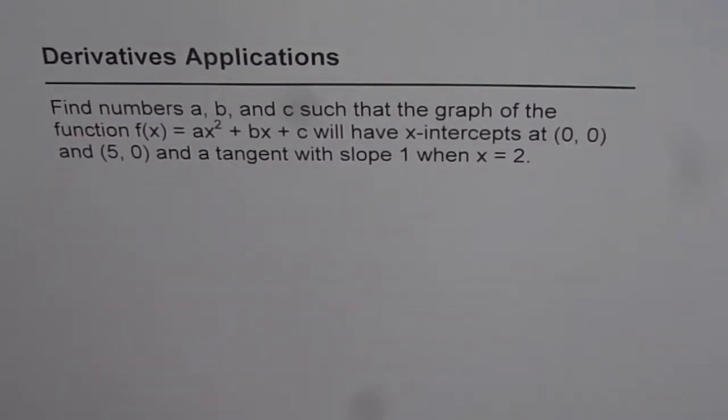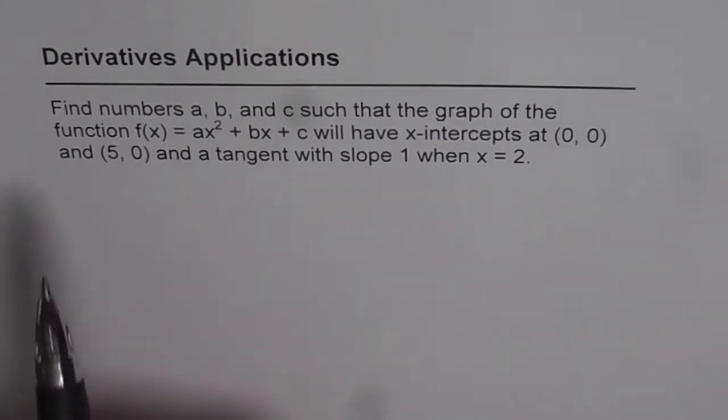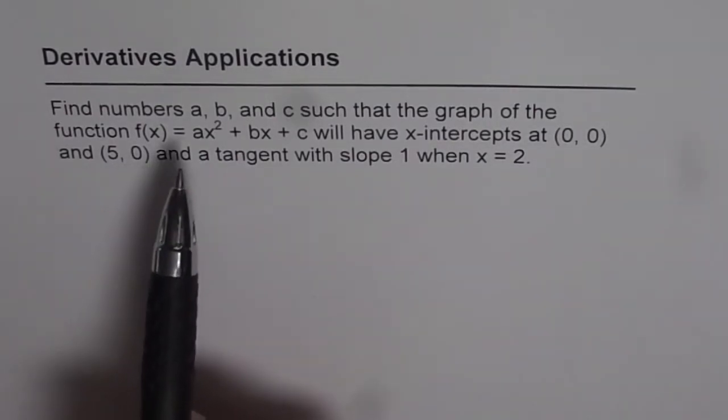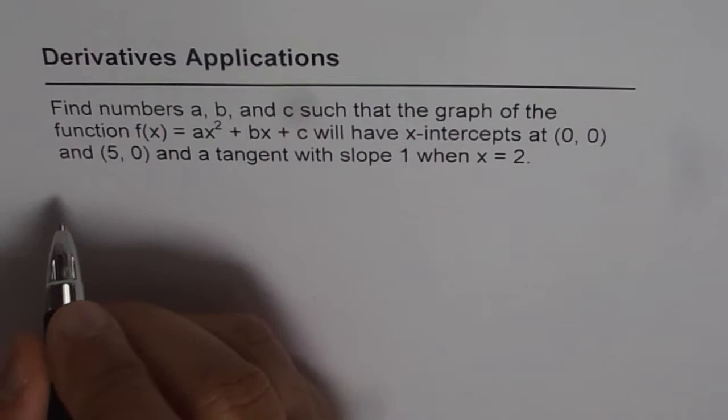Let us do some examples with applications of derivatives. Now the question here is, find numbers a, b, and c such that the graph of the function f(x) = ax² + bx + c will have x-intercepts at (0,0) and (5,0) and a tangent with slope 1 when x = 2.